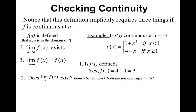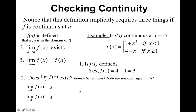Now I have to determine if the limit as x approaches 1 of f of x exists. In order to do that, you have to check both the left and the right limits. Checking from the left of 1, the numbers are smaller than 1, so I use the top piece and plug in 1, and I get 2. From the right, I use the bottom piece and I get 3. Because the left and the right are not the same, the limit does not exist.